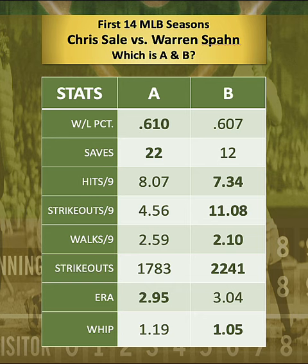We will count it down here shortly. Notice some of the big clues here — the big edge in strikeouts goes to column B. But there are some other subtle differences for stat column A, including the number of saves. So which one had more saves in their career? Let's count it down.